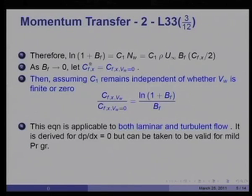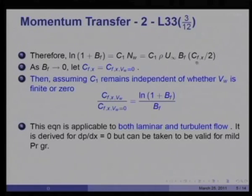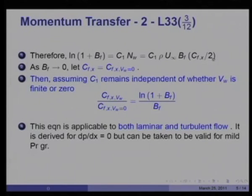We can interpret n_w·u_infinity/tau_w by noting that n_w equals rho·v_w, so this becomes rho·v_w·u_infinity/tau_w. Multiplying and dividing by u_infinity gives v_w/u_infinity times rho·u_infinity²/tau_w, which is v_w/u_infinity times C_fx/2 — nothing but the blowing parameter B_f invoked during similarity and integral solutions. Hence ln(1 plus B_f) equals C1·n_w, giving ln(1 plus B_f) equals C1·rho·u_infinity·B_f/(C_fx/2).